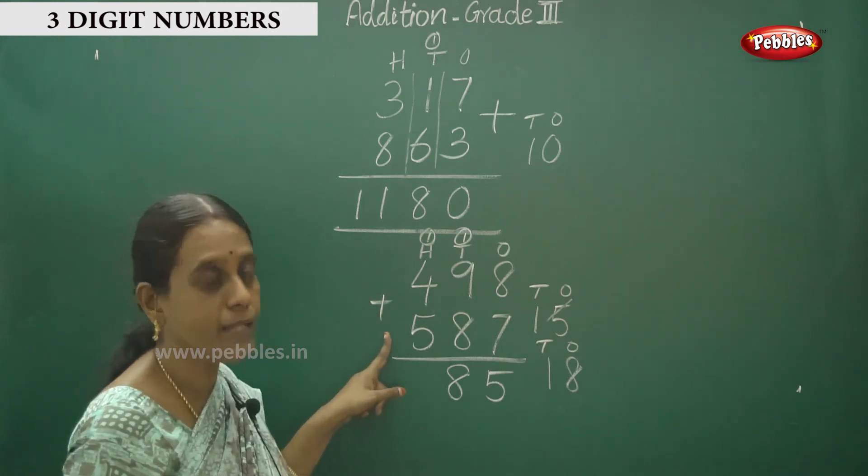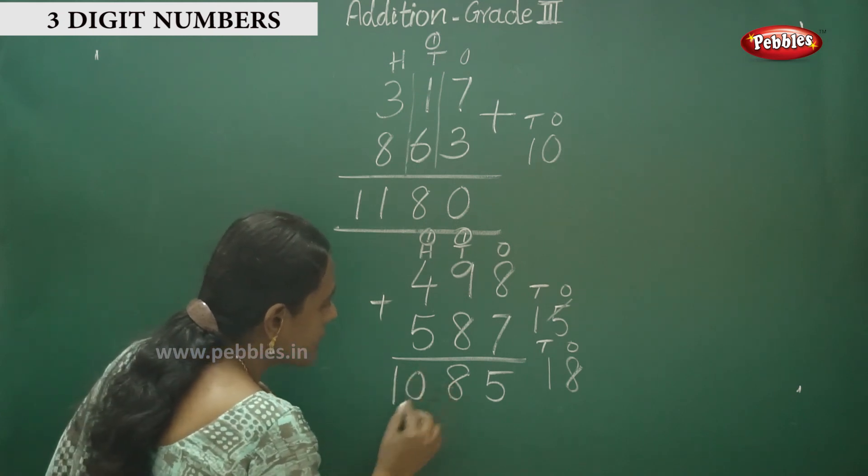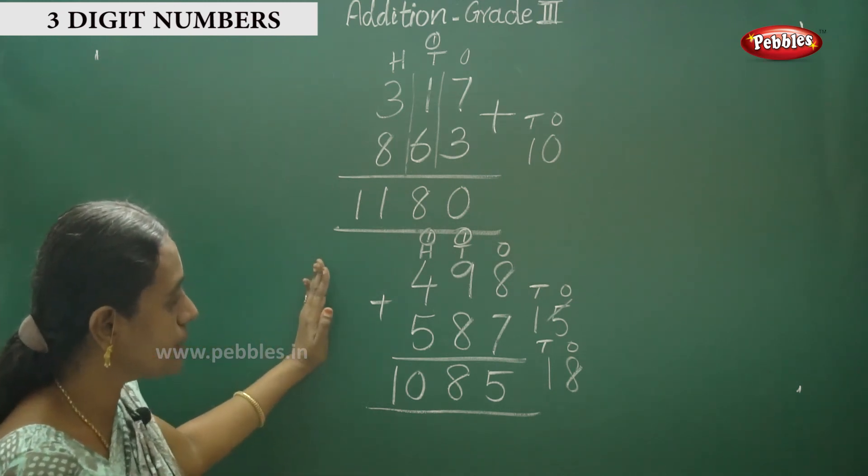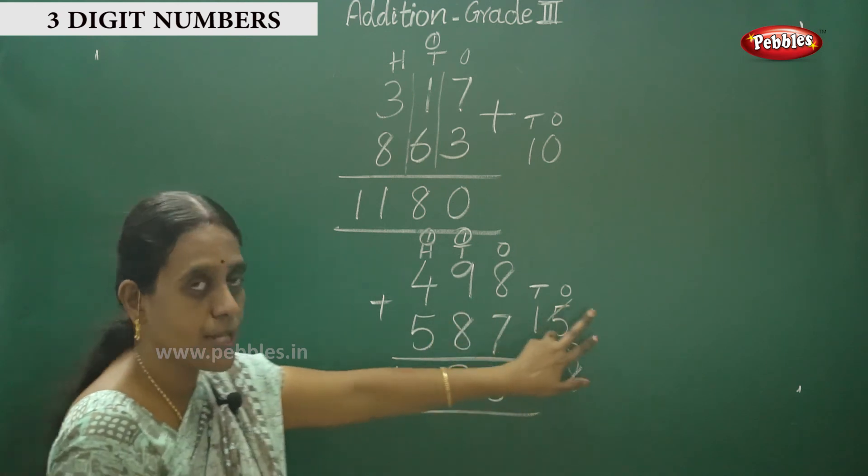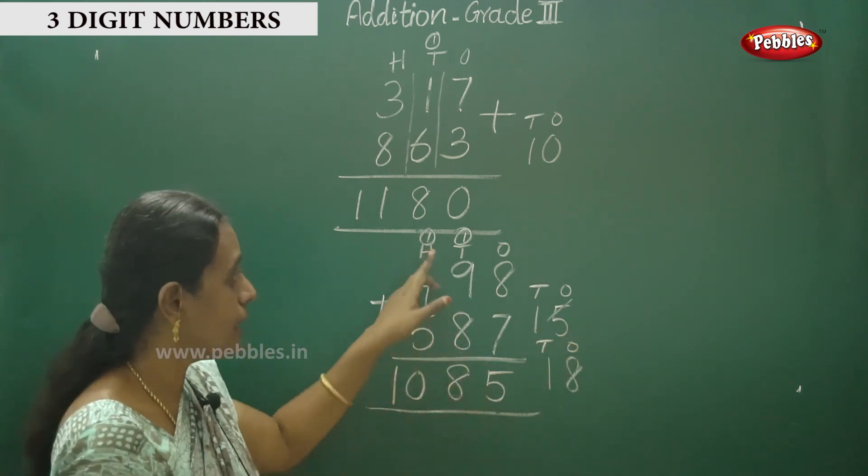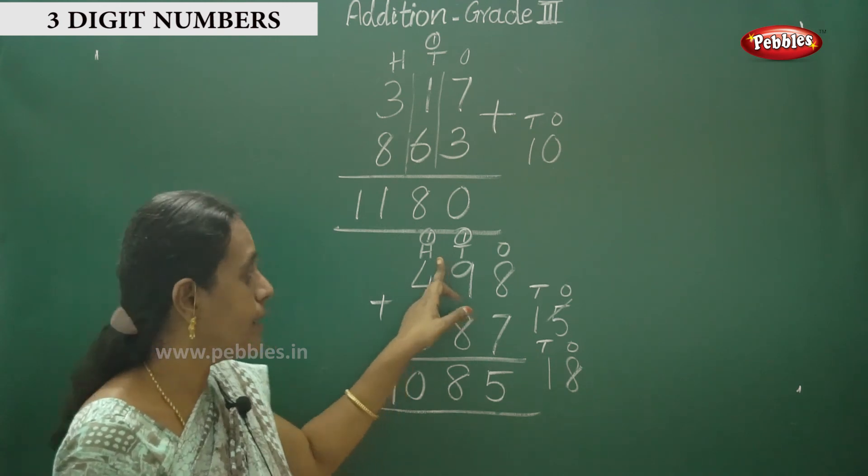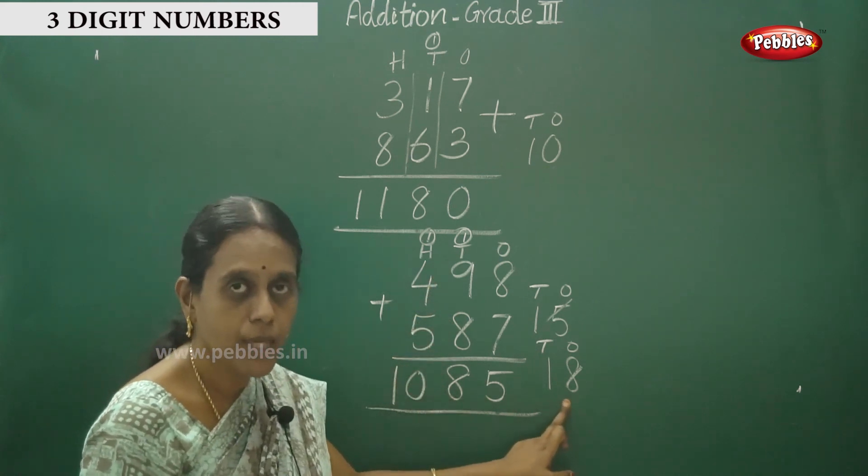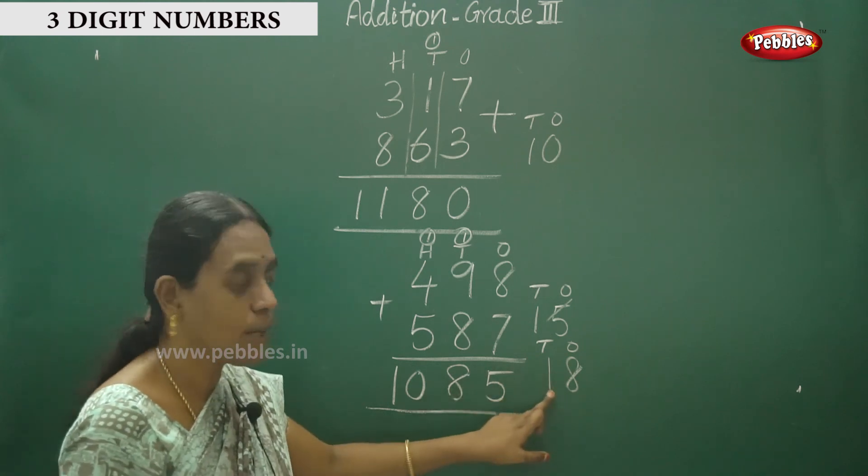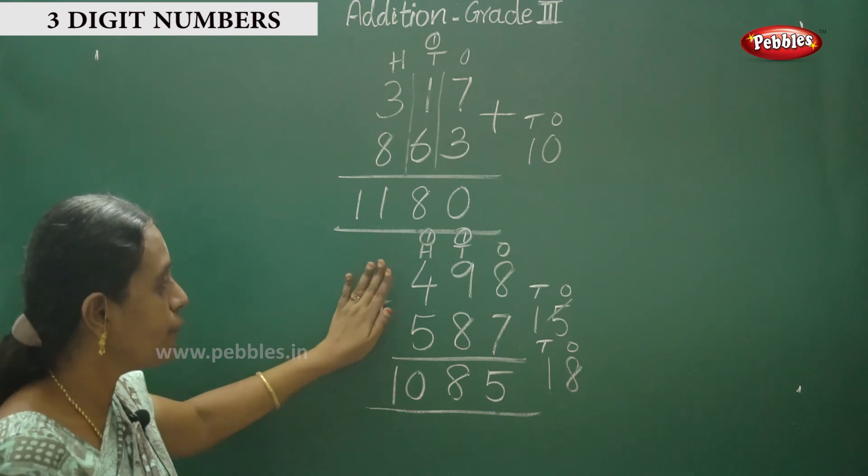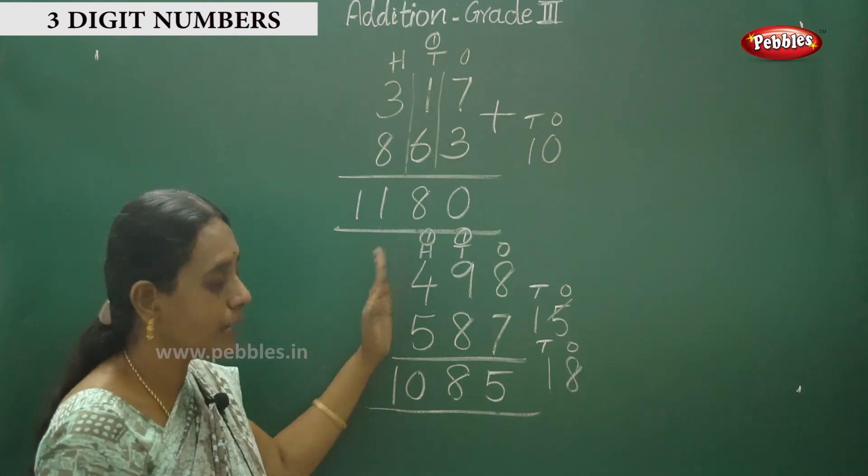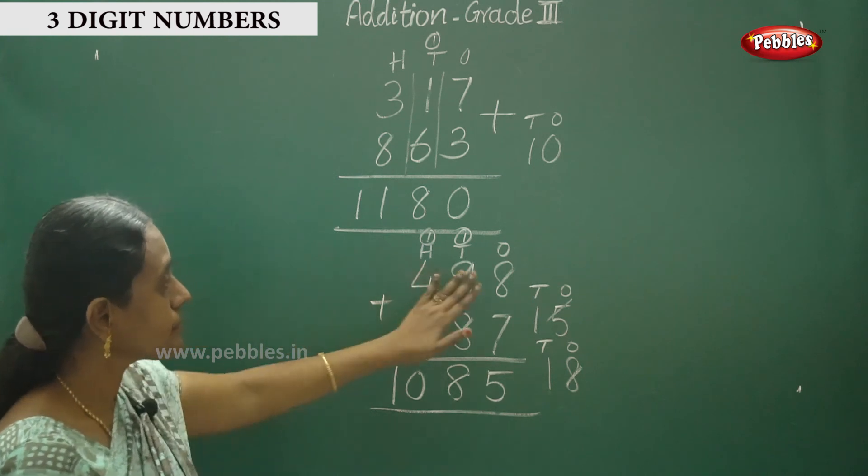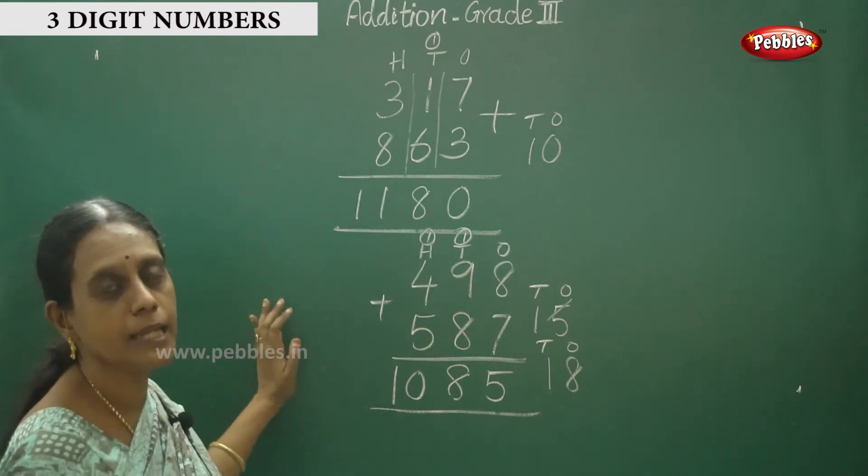Now we have to add these two numbers. Four in the mind and five in the finger. After four comes nine. And nine plus one, the answer is ten. So the answer is 1085. This is the way to write two-digit answers. This is the carry over method for three-digit numbers.